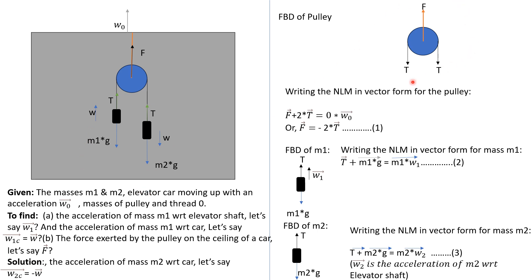We have made the free body diagram of the pulley. The forces acting on the pulley are: the tension force F in the red thread, and these two tension forces T acting in the downward direction. We are writing Newton's law of motion in vector form for the pulley: summation of all forces equals mass of pulley times acceleration of pulley.